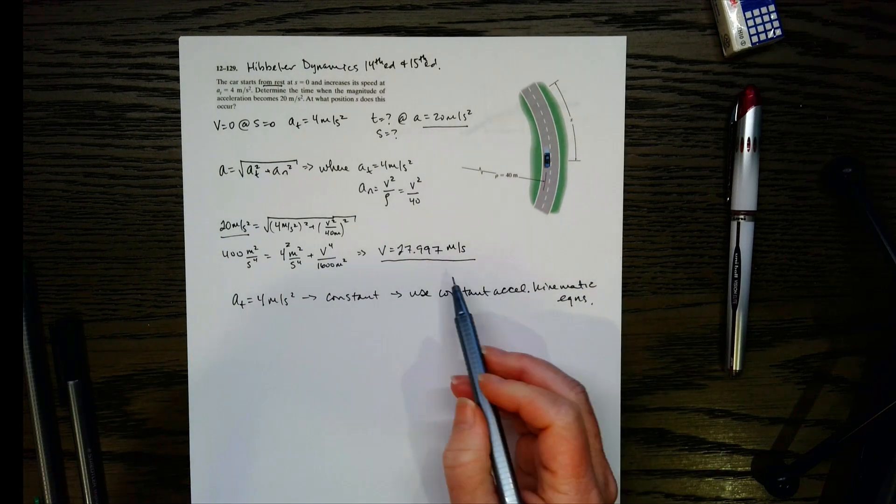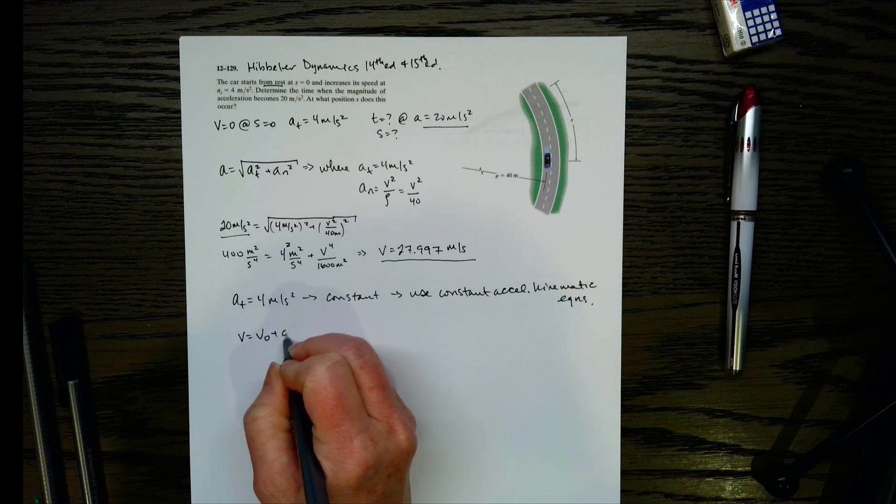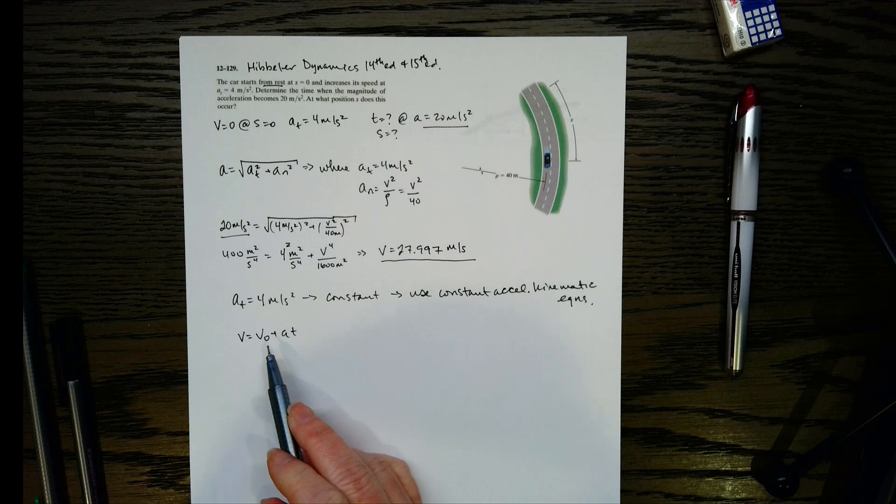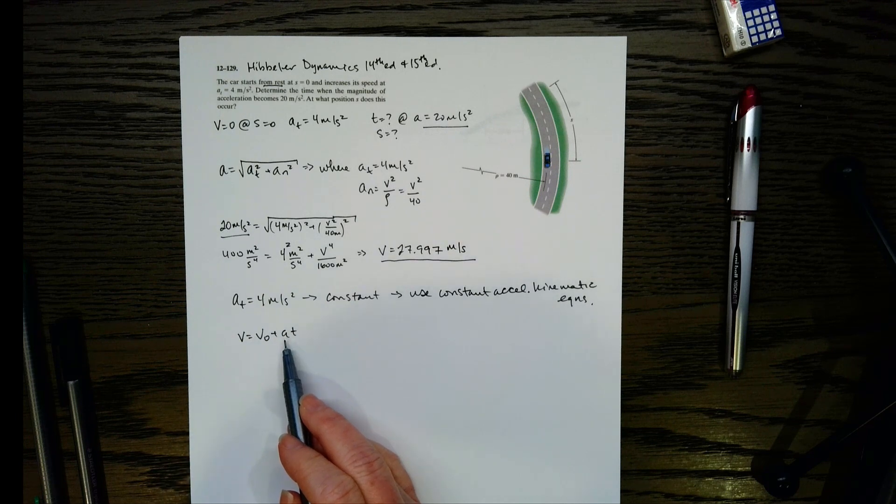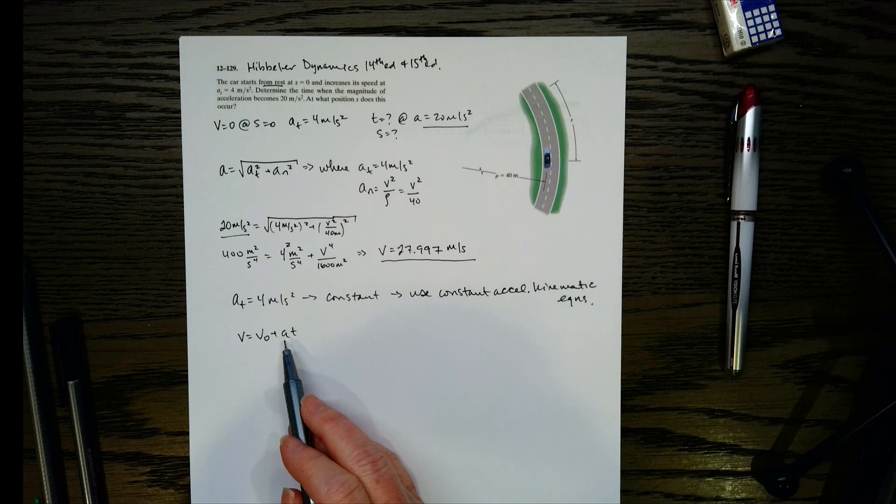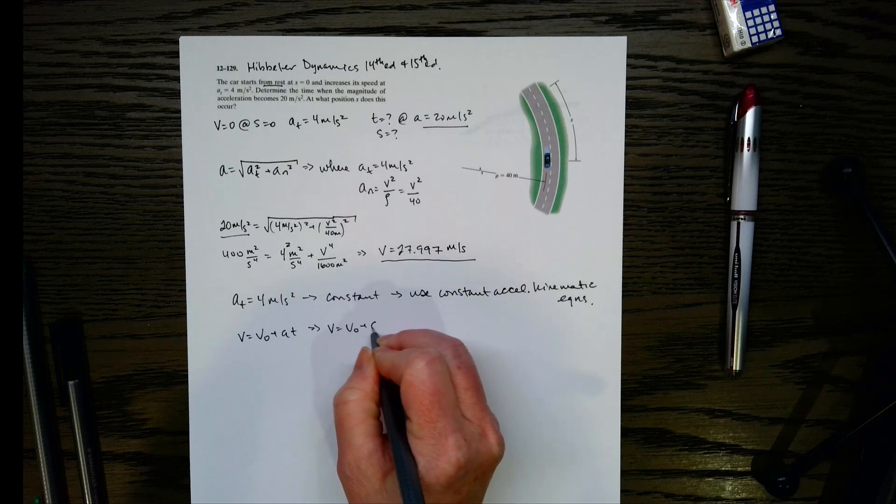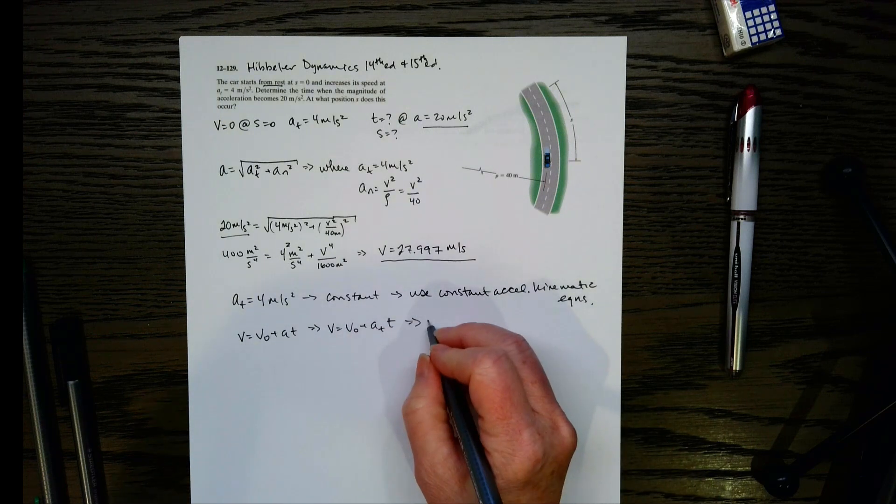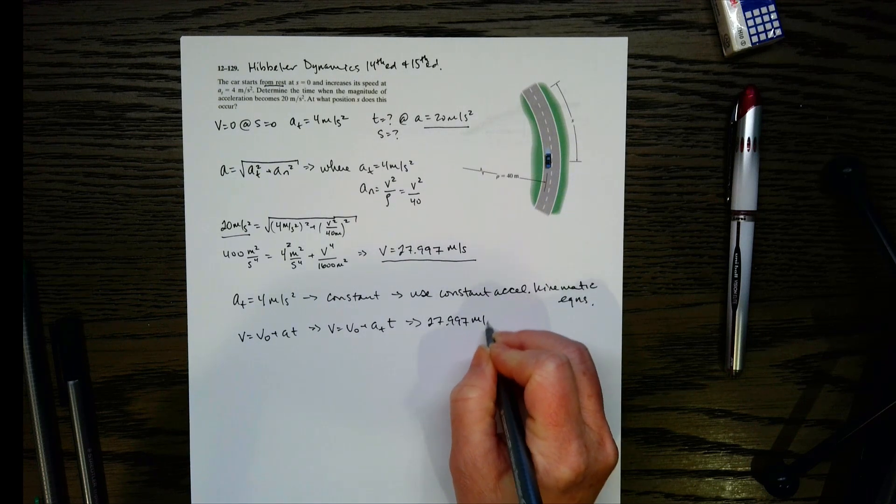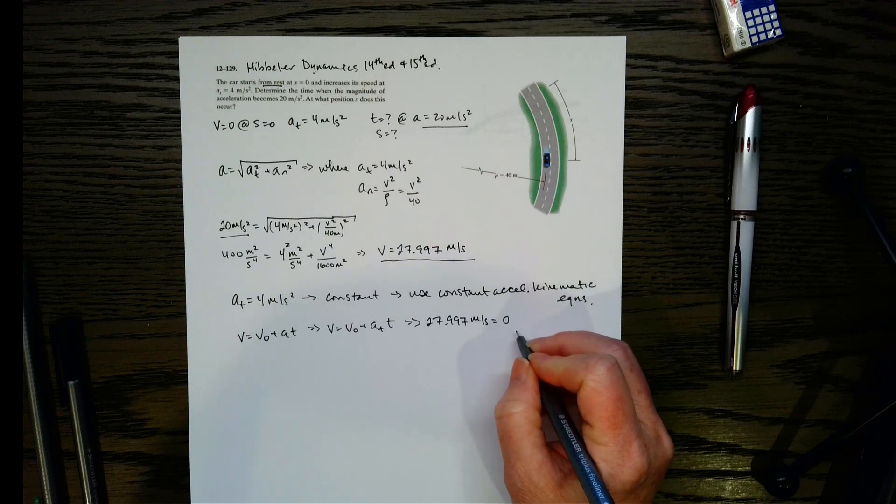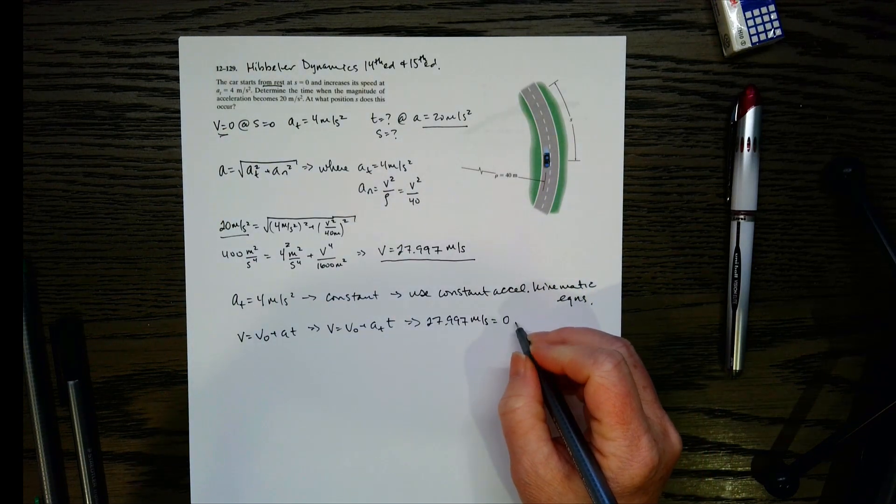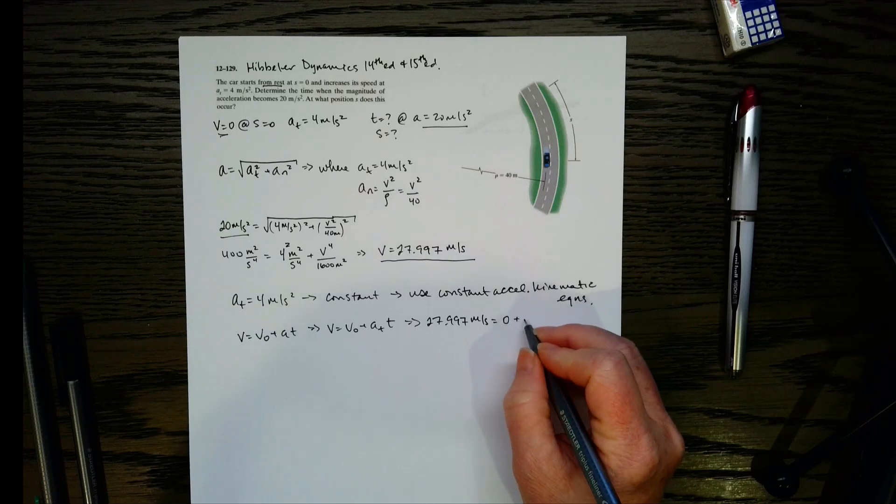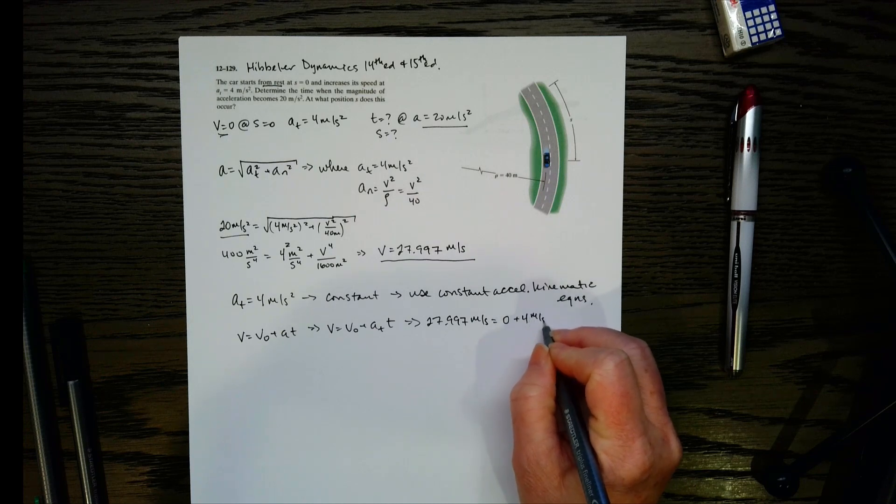So let's write down what those are. First, let's do the simplest one. So v equals v naught plus a t. Now if we look right here in this equation, this acceleration is the a sub t. The acceleration in these kinematic equations will always be that a sub t, not a sub n, and it's not going to be this magnitude, it's just a sub t. And now if we plug everything in, the only unknown will be t.